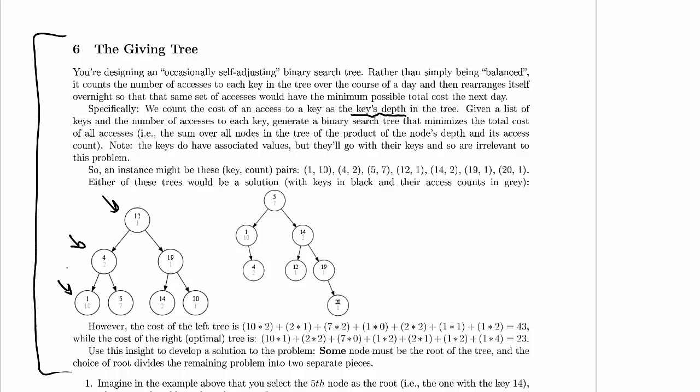Given a list of keys and the number of accesses to each key, generate a binary search tree that minimizes the total cost of all accesses. So this is our goal. We are given a list of keys and the number of accesses to each key, and we generate a BST that minimizes the total cost of all the accesses. That total cost is the sum over all the nodes in the tree of the product of the node's depth and its access count. The keys do have associated values, but they'll go with their keys and so are relevant to the problem.